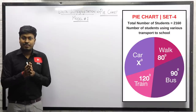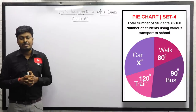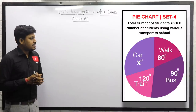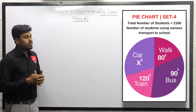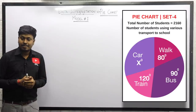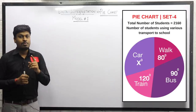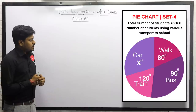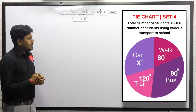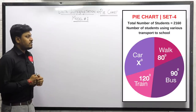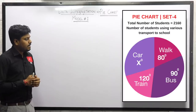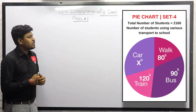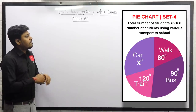Thanks for being here on my YouTube channel. In this video we are going to solve set number 4, a pie chart based on model number 1. The chart shows a total of 2160 students going to school by different modes of transport.